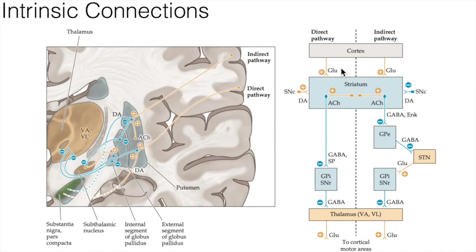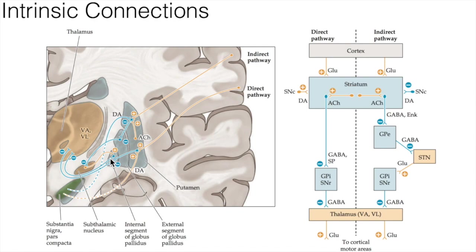Looking at the direct pathway, illustrated here in a coronal section, we can see it begins as an excitatory glutamatergic projection from the cerebral cortex to the striatal complex — that is, the caudate nucleus and the putamen. These striatal neurons then inhibit cells in the internal segment of the globus pallidus and in the substantia nigra pars reticulata. These striatopallidal and striatonigral fibers use GABA — gamma-aminobutyric acid — the major inhibitory neurotransmitter in the brain, as well as substance P.